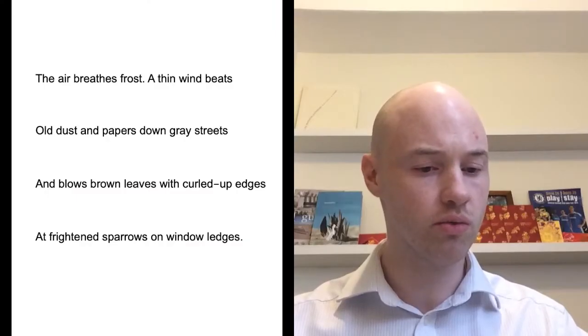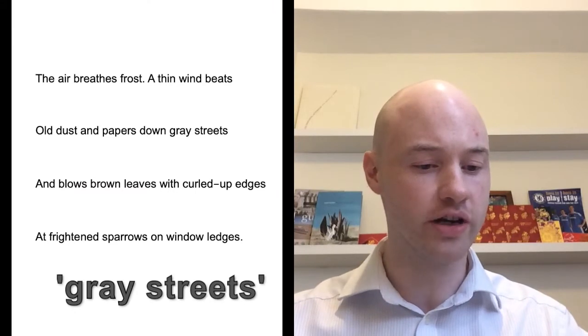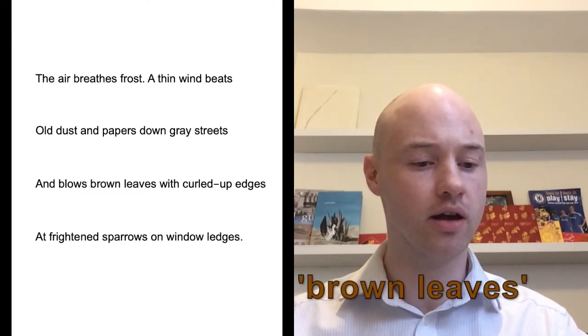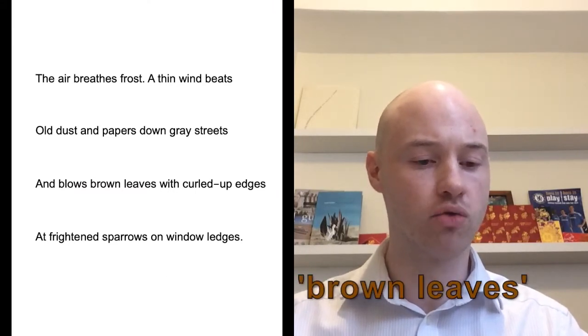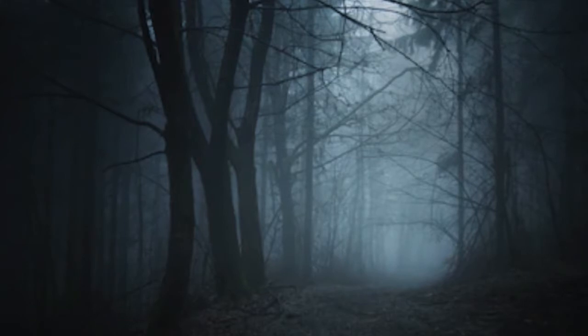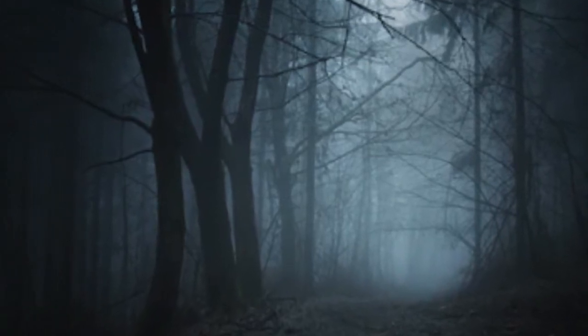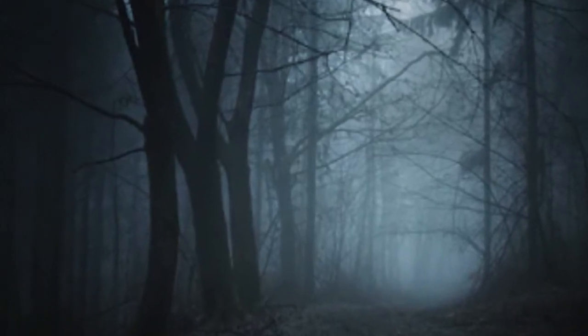We can also look at what kind of colours are used in this poem. We've got grey streets and brown leaves and no other colours really. This all helps to create this impression of quite a drab, dreary, miserable day right at the end of autumn, beginning of winter.